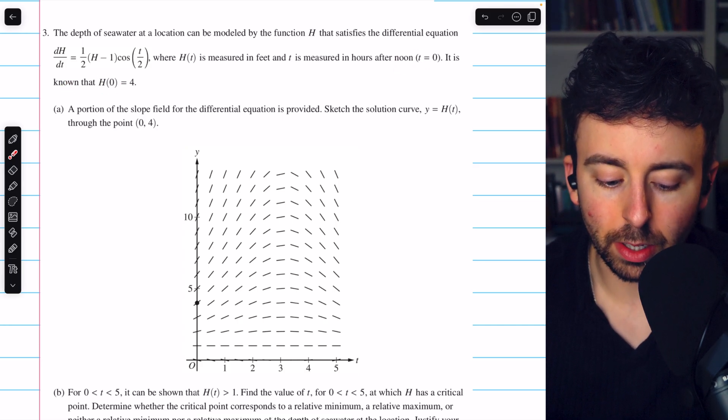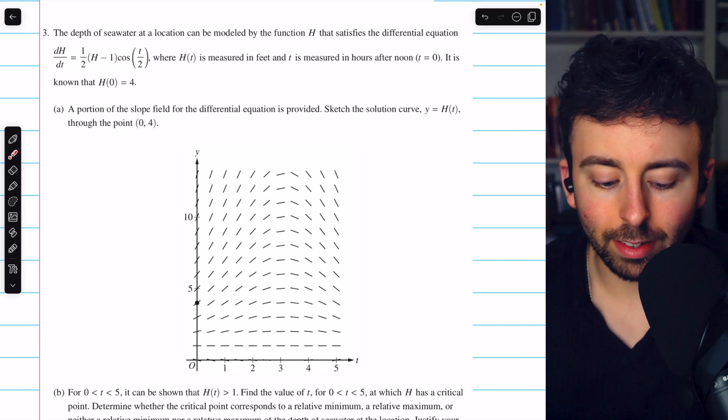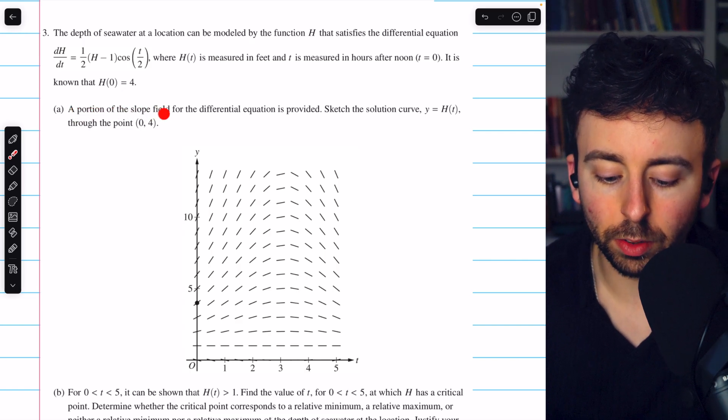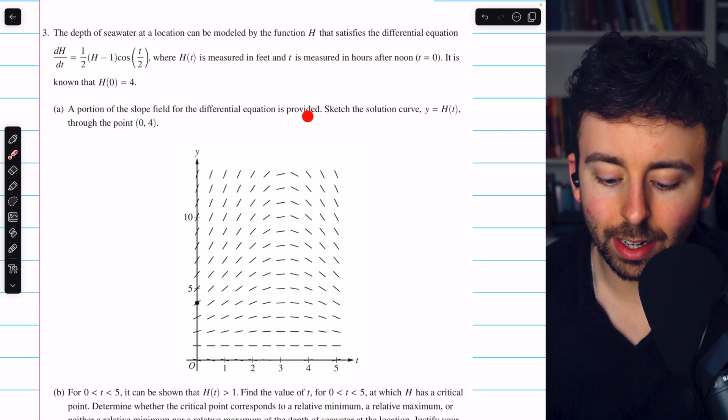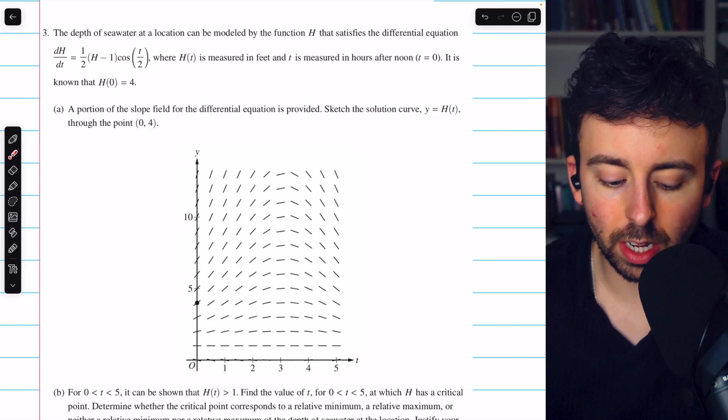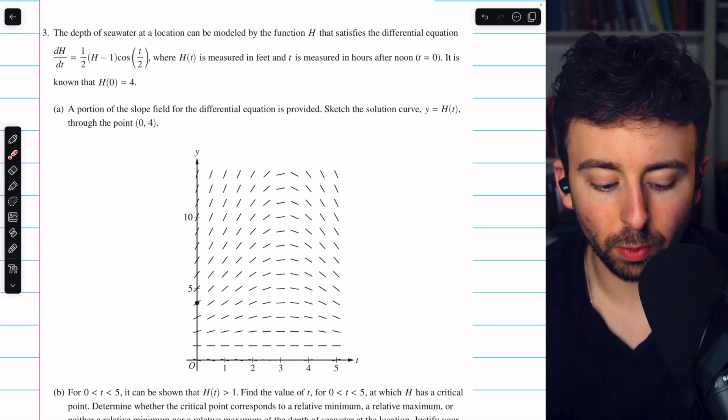It is known that h(0) equals four. Part A says a portion of the slope field for the differential equation is provided. Sketch the solution curve, y equals h(t), through the point (0,4), which is that initial condition that was given to us.